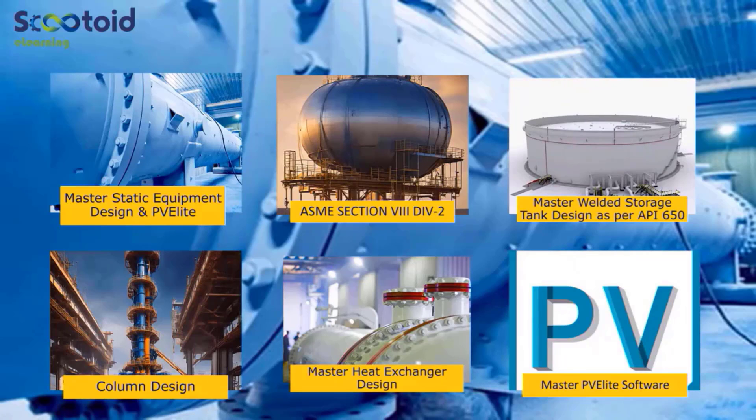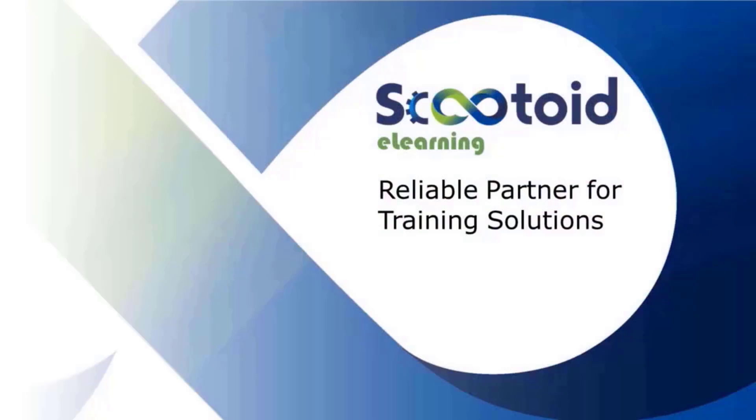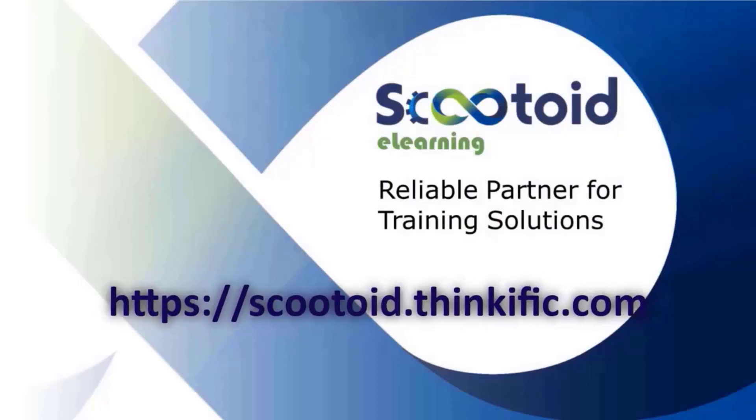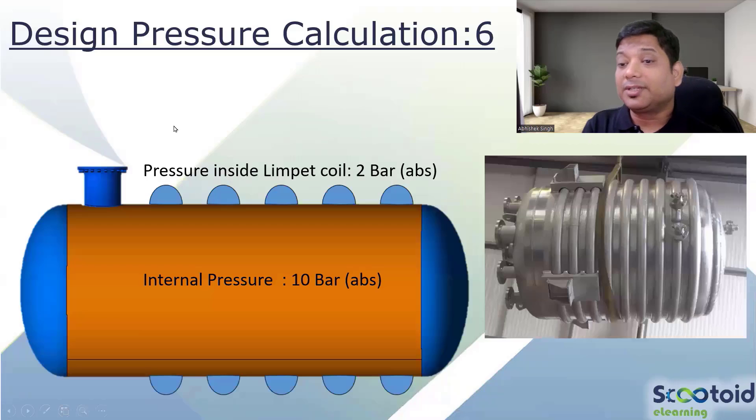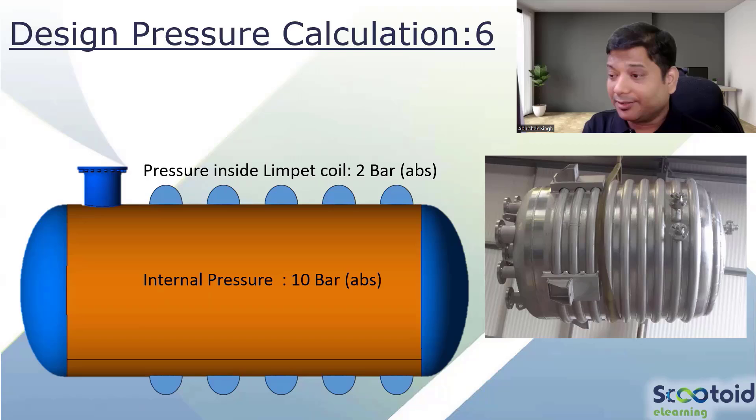This is calculation 6, very interesting. Most of the time you will get that limpet coil scenario. We have a 10 bar absolute pressure in the vessel, limpet coil with 2 bar absolute, and atmospheric as usual 1 bar.